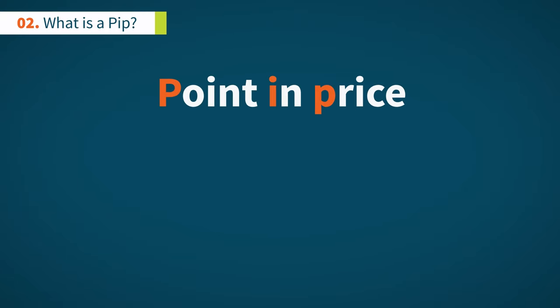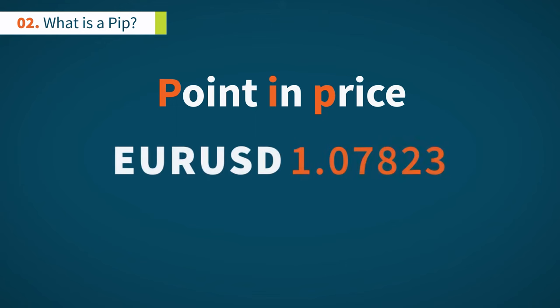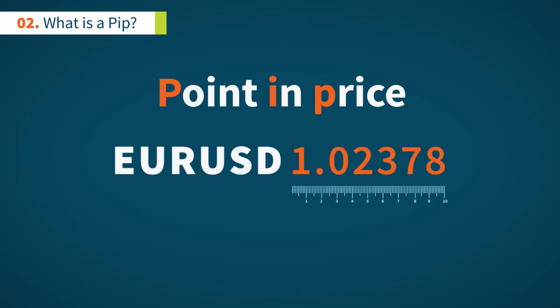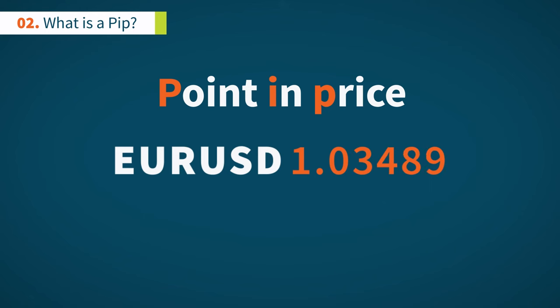A point in price, or PIP for short, is a measure of the change in the exchange rate of a currency pair. It is the smallest unit of measurement we use when trading currencies.